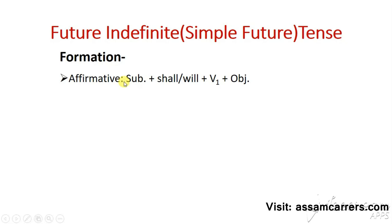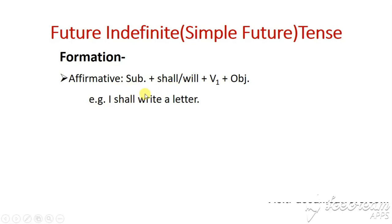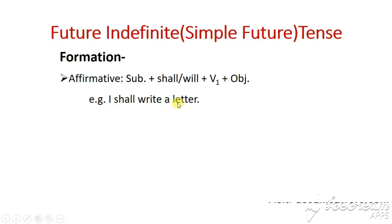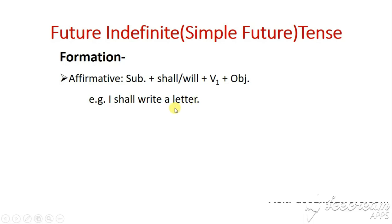This is the affirmative form. This is the future indefinite tense form. The other name is the simple future form. You can write this. For the future indefinite tense, the structure is: Subject + will + Verb 1 + Object.